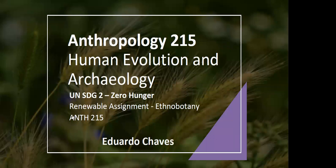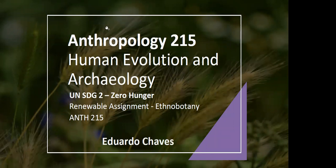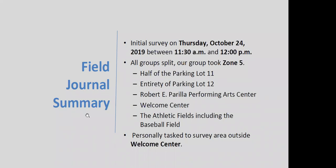Good afternoon. My name is Eduardo Chavez and I'm here to talk a little about this project from a student perspective. This is Anthropology 215 — Human Evolution and Archaeology. The SDG we're working with is Zero Hunger, and it's a renewable assignment. Our initial survey took place on Thursday, October 24th, 2019. It was 30 minutes, from 11:30 AM to 12 PM. But in that time we managed to survey quite a lot. The group that I was a part of took Zone 5, which was half the parking lot at the Montgomery College campus in Rockville — mostly parking lots, as well as part of the Robert E. Perilla Performing Arts Center, the Welcome Center, and the athletic fields, which included the baseball field. I was personally tasked to survey the area outside of the Welcome Center.